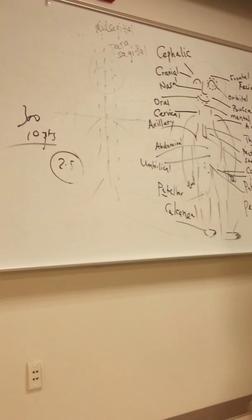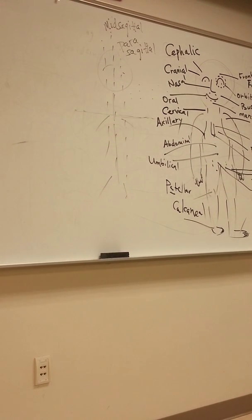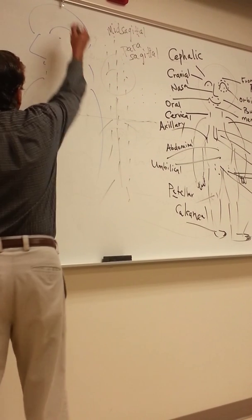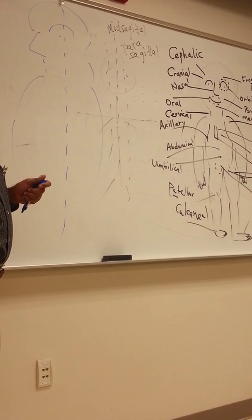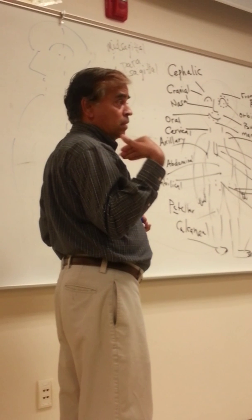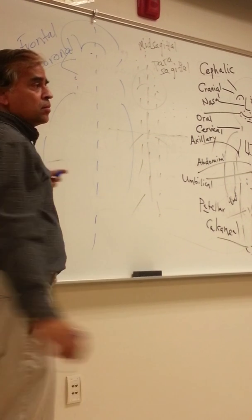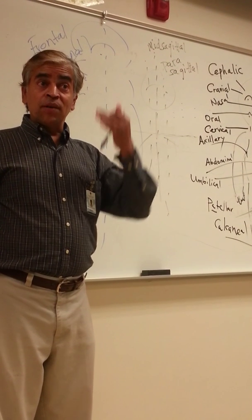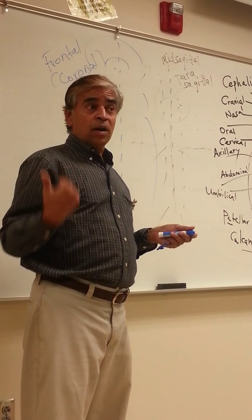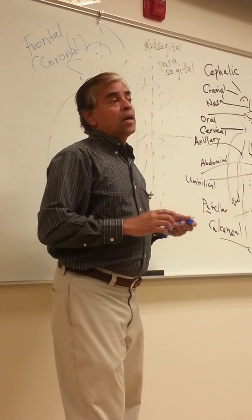Then if you see the body from the lateral view, a plane passing through this orientation divides the body into anterior and posterior two halves. They call this the frontal plane, also called the coronal plane. So the three major planes are: sagittal (mid-sagittal and para-sagittal), transverse, and frontal or coronal.